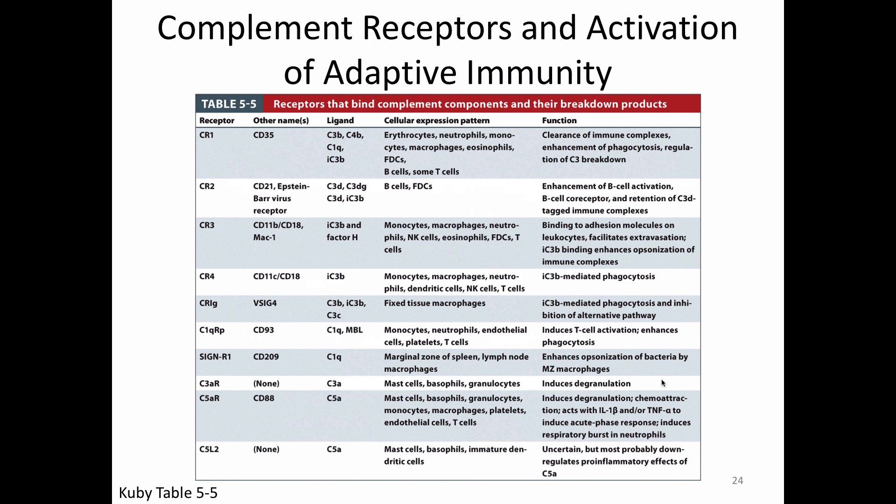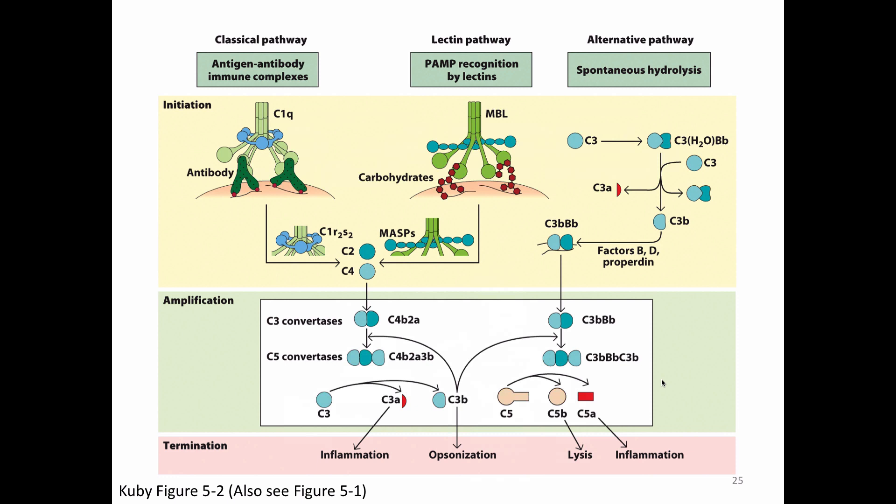So those are the things that happen in our complement cascade. An antibody recognizes our microbe, initiates C1, which leads through C4 and C2. We turn on C3 and then C5, and then we get our different ways of dealing with the microbe: inflammation, opsonization, lysis, or activation of the adaptive immune system. However, the classical pathway using antibodies is not the only way to turn on the complement cascade.